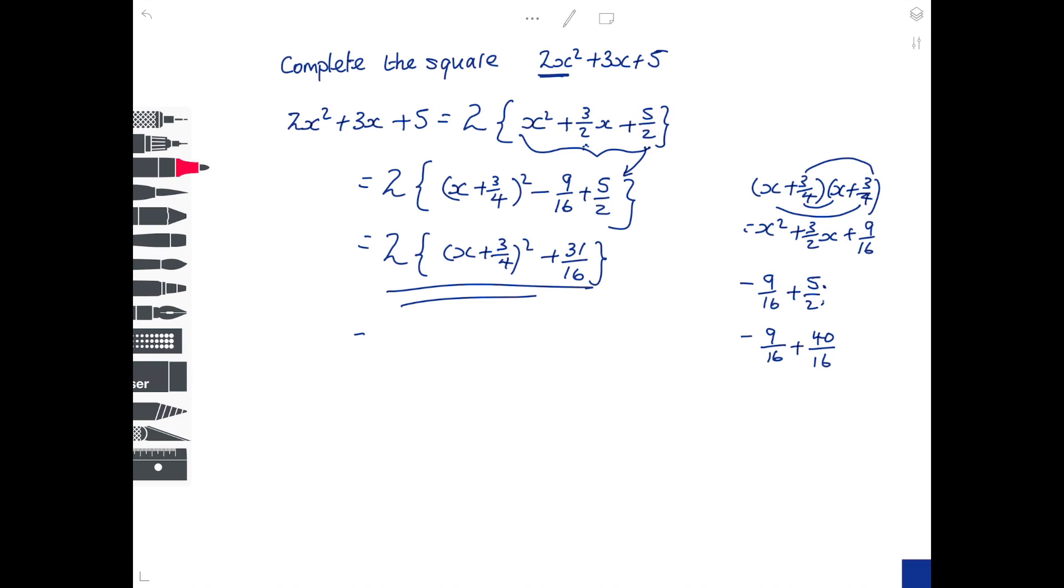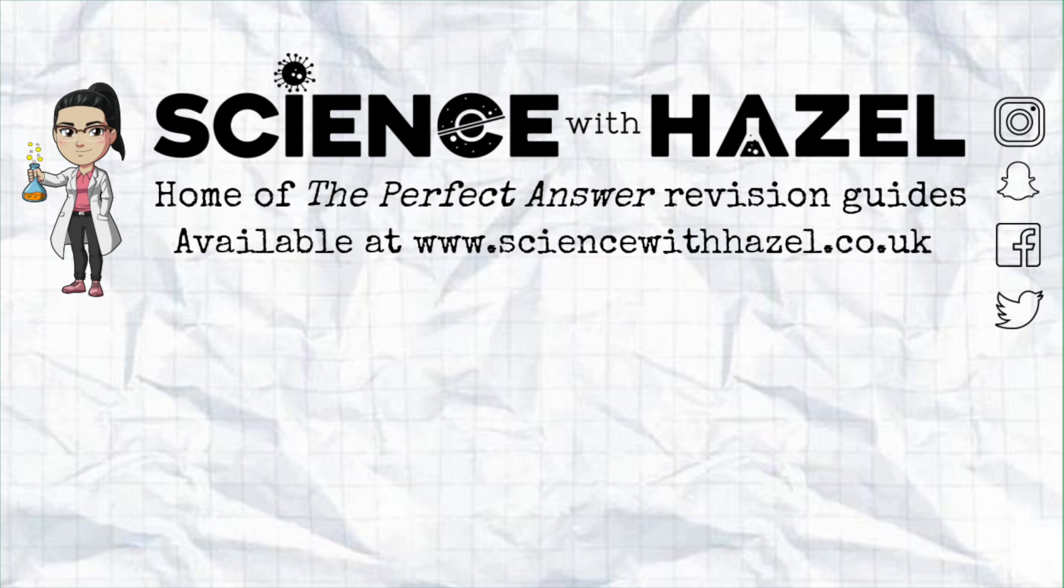Again, you can leave it as it is, you can leave it like that, or if I multiply the curly bracket you get 2 lots of x plus 3 quarters squared plus 31 over 8.